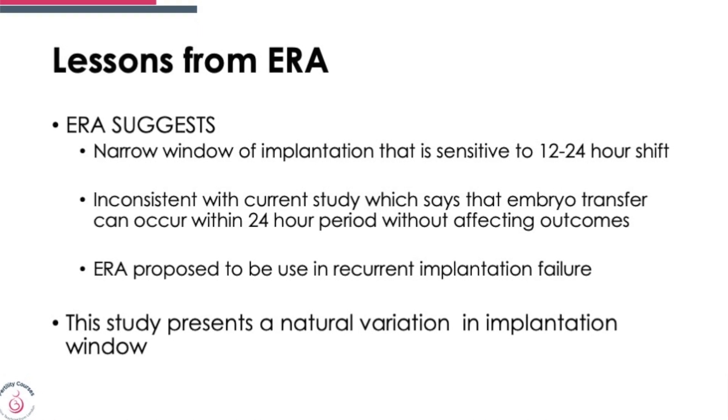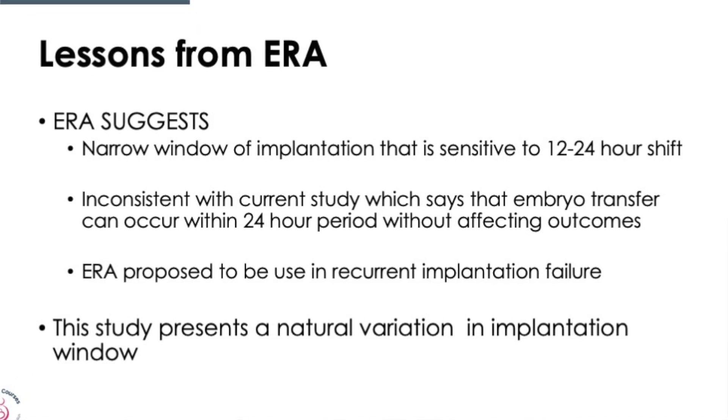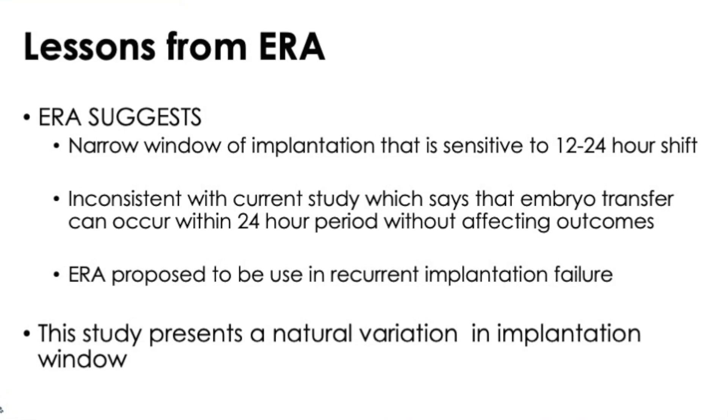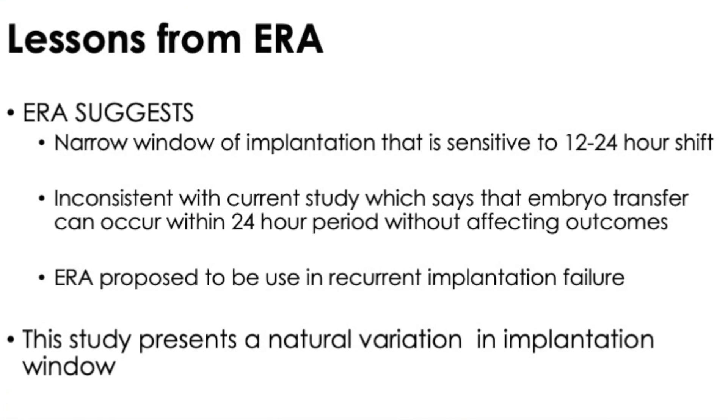Regarding the ERA test — the endometrial receptivity assay — it is very specific and sensitive to a 12 to 24-hour shift in the implantation window. However, comparing these two studies, they are quite inconsistent: the natural cycle-based study says the implantation window can vary by a day without affecting pregnancy rates, whereas ERA, which is used for recurrent implantation failures, suggests much greater precision is needed. At present, ERA is a useful tool, but we still don't know exactly where the implantation window lies or if it differs between patients.